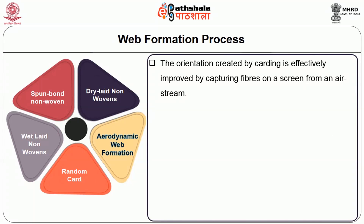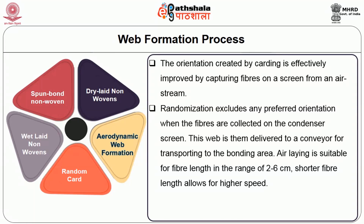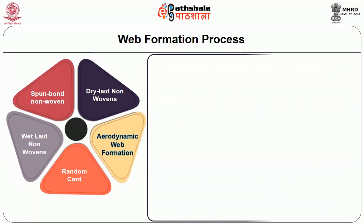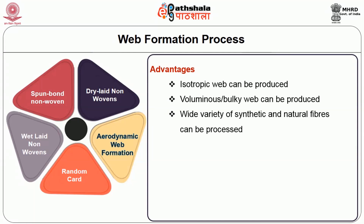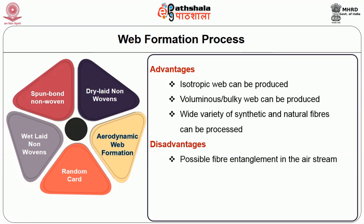Aerodynamic web formation, also called the air-lay technique: the orientation created by carding is effectively improved by capturing fibers on a screen from an air stream. Randomization excludes any preferred orientation when the fibers are collected on the condensed screen. This web is then delivered to a conveyor for transporting to the bonding area. Air laying is suitable for fiber length in the range of 2-6 cm. Shorter fiber lengths allow for higher speed. Air laying is expensive and slower than carding. Some advantages of air-laid webs: isotropic webs can be produced, voluminous or bulky webs can be produced, and a wide variety of synthetic and natural fibers can be used. Some disadvantages include possible fiber entanglement in the air stream and a lower level of fiber opening.